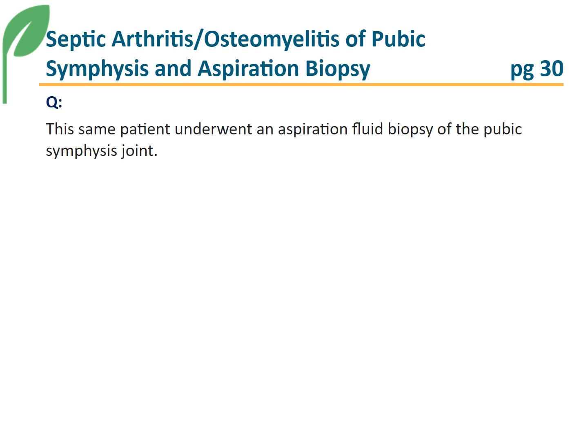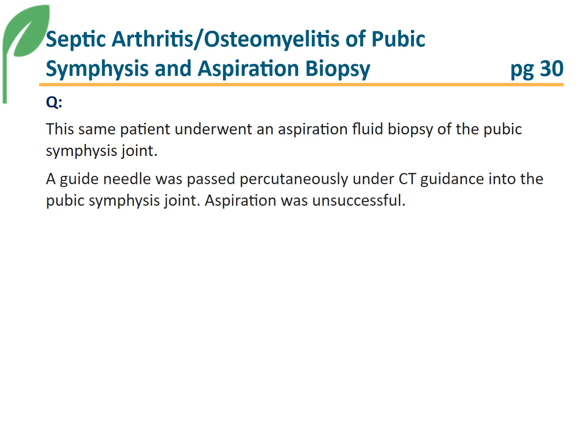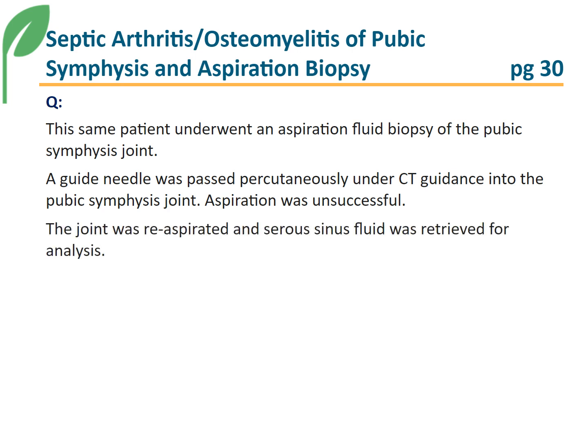The same patient underwent an aspiration fluid biopsy of the pubic symphysis joint. A guide needle was passed percutaneously under CT guidance into the pubic symphysis joint. The aspiration was unsuccessful. The joint was re-aspirated, and serous sinus fluid was retrieved for analysis. Coding Clinic is asked what is the correct root operation and body part value for an aspiration fluid biopsy of the pubic symphysis joint.